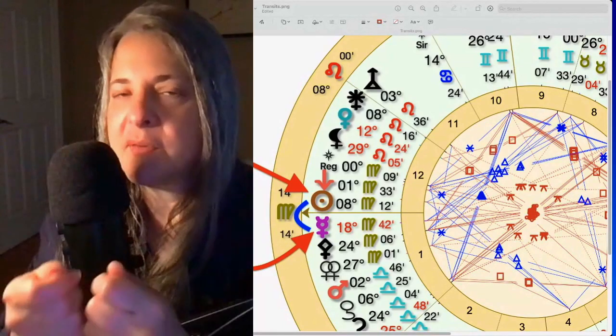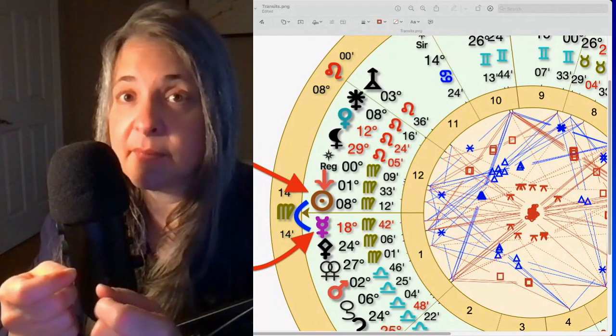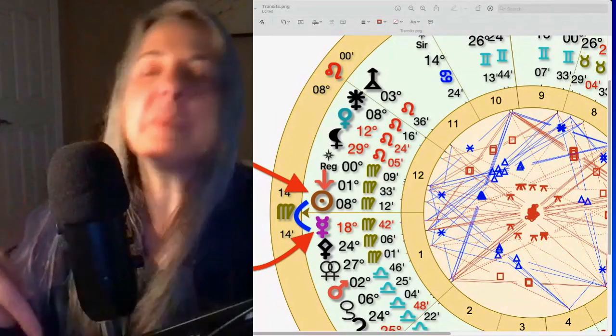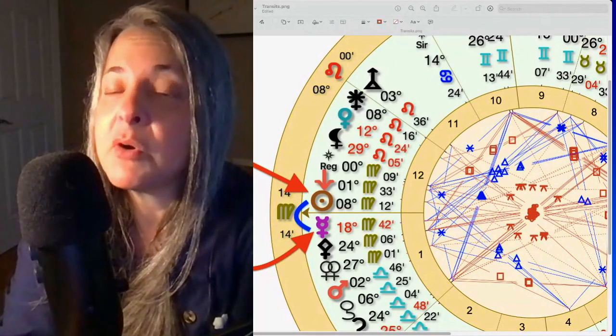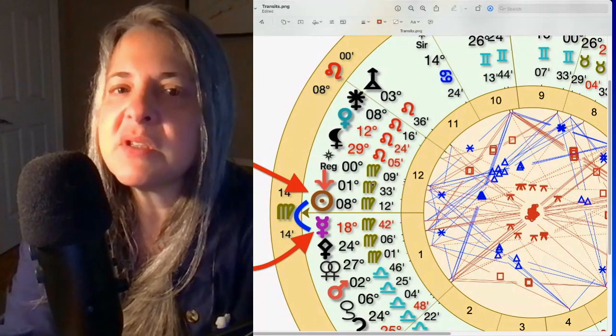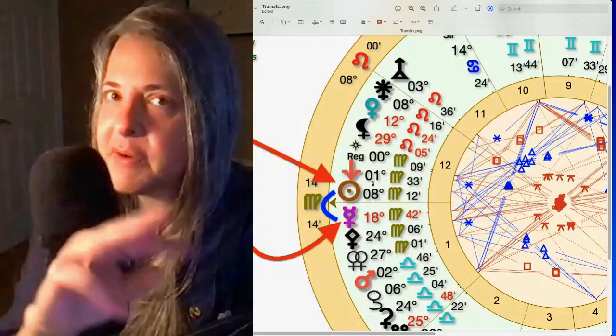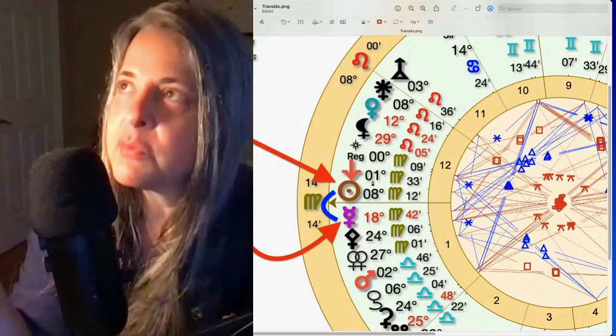Once Mercury gets beyond that 22 degrees, she's out of her retrograde zone, she's out of the shadow zone. She now has all the information to make a better decision. So I'll include the Mercury retrograde videos down below so that you can go watch those if you would like more information, a deep dive on Mercury retrograde.